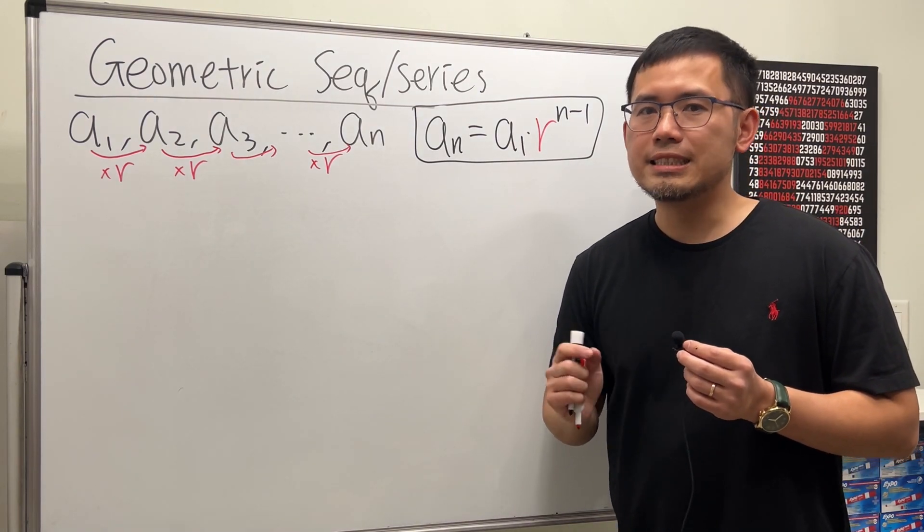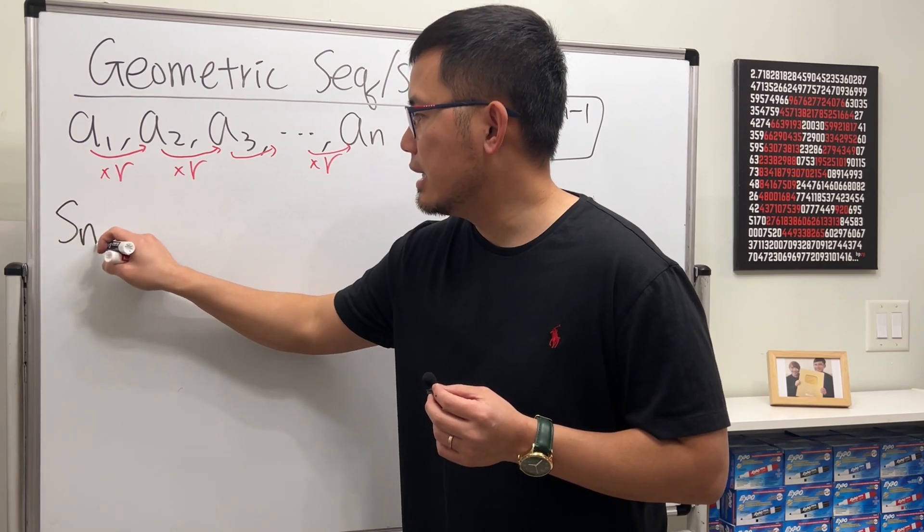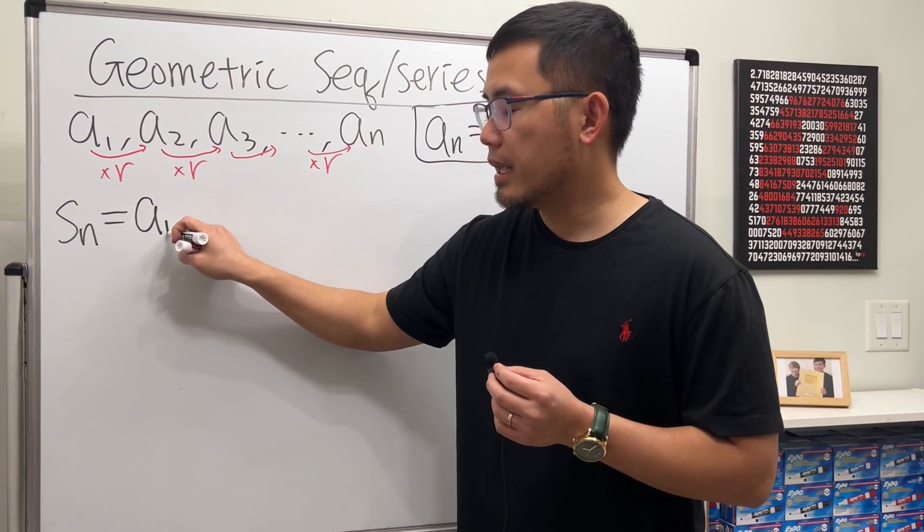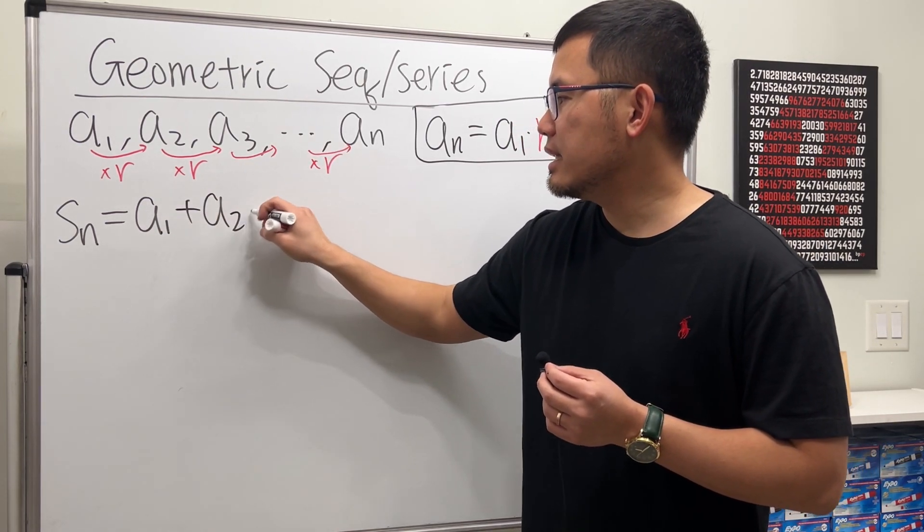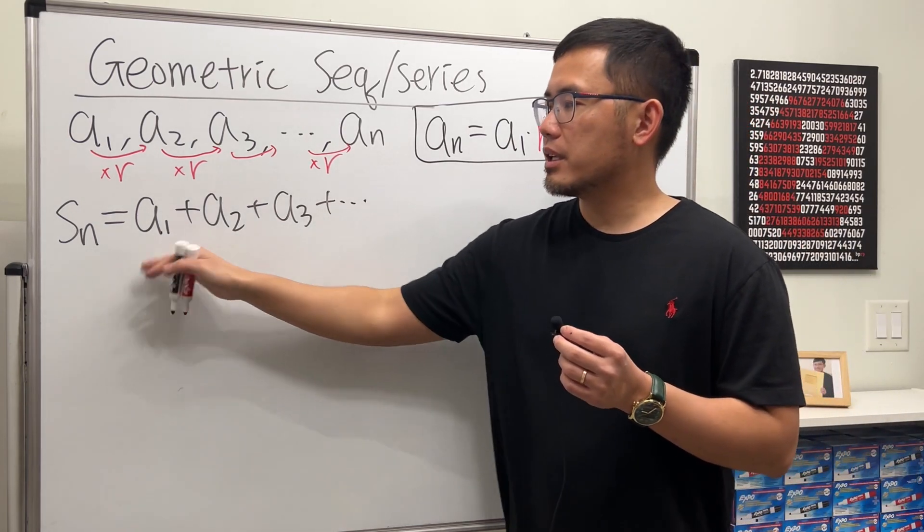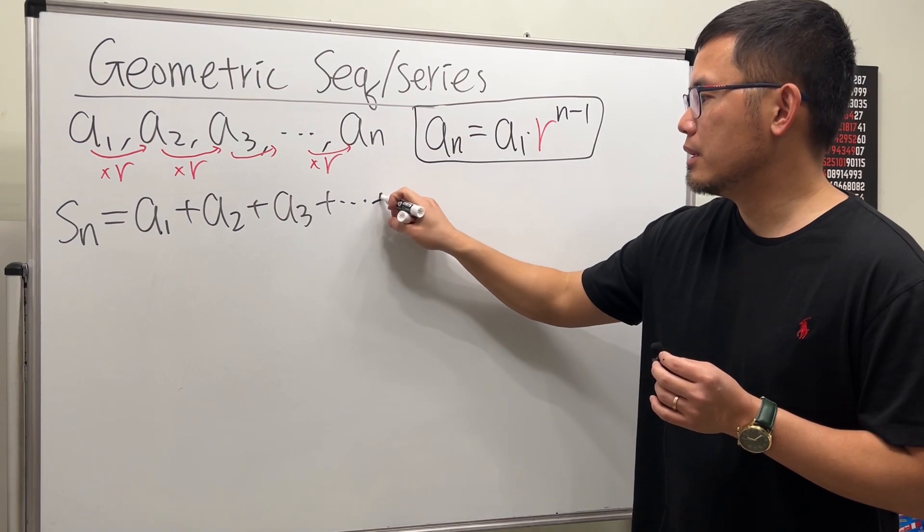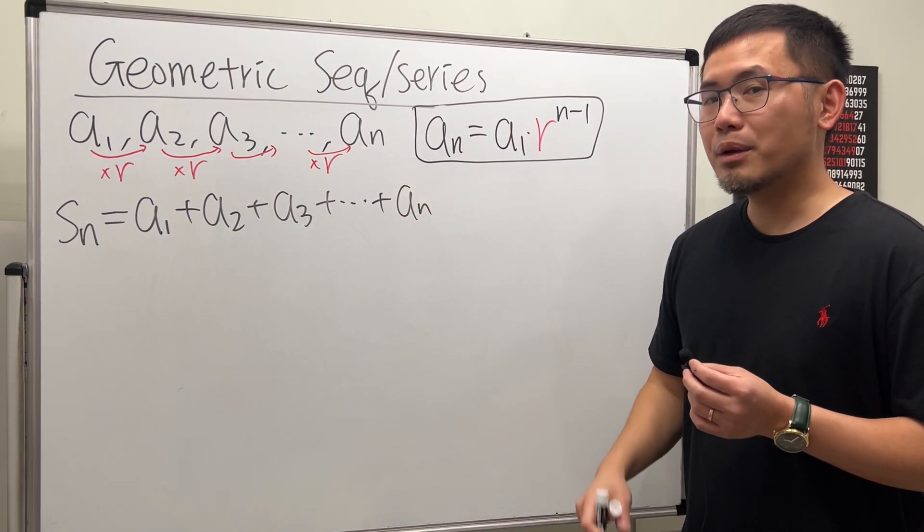Next, let's talk about the nth partial sum. It's the following. The notation is S_n, and this means we are going to start with the first term, and then we add the second term, and then add the third term, and so on. Here, for the nth partial sum, we are going to stop at the nth term. So we add a_n.